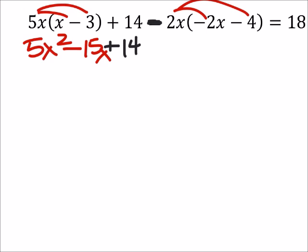And then we're distributing this as negative 2x, so negative 2x times negative 2x would be a positive 4x squared. And then that's a minus, but we can treat that as a negative 4, so negative 2x times negative 4 would be a positive 8x, and this is going to equal 18.